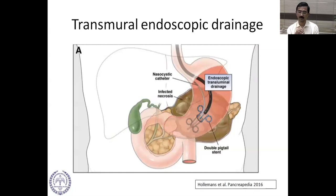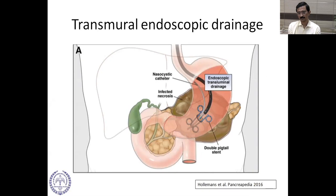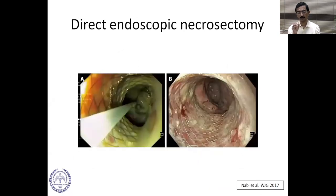Transmural endoscopic drainage involves taking the scope into the stomach, making a hole into the posterior collection, and placing stents along with an irrigating catheter to flush out infected material. With a metal stent, the larger diameter allows entry into the cyst for more thorough cleanup. At the end of cleanup, healthy granulation tissue is seen.